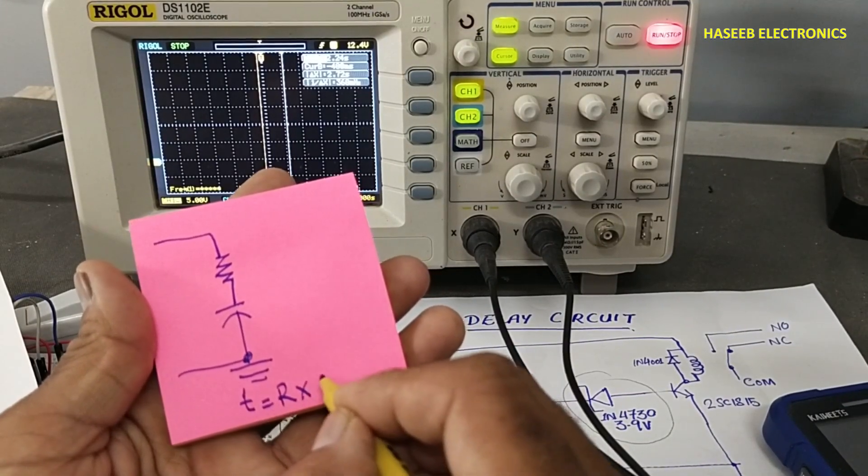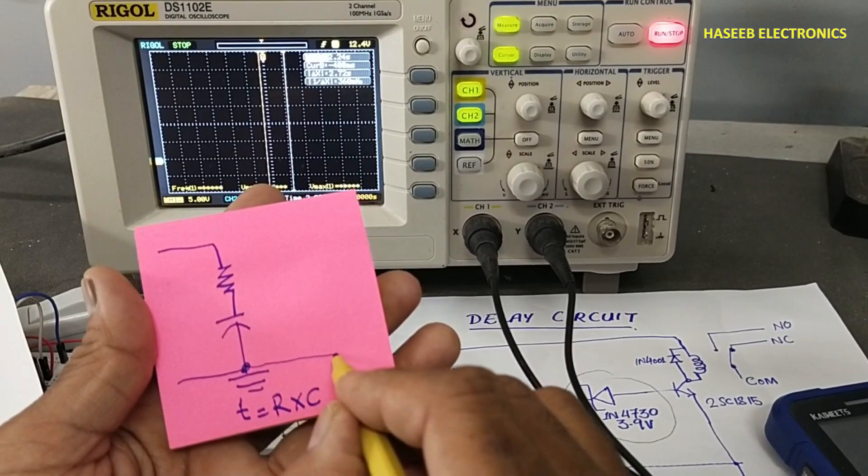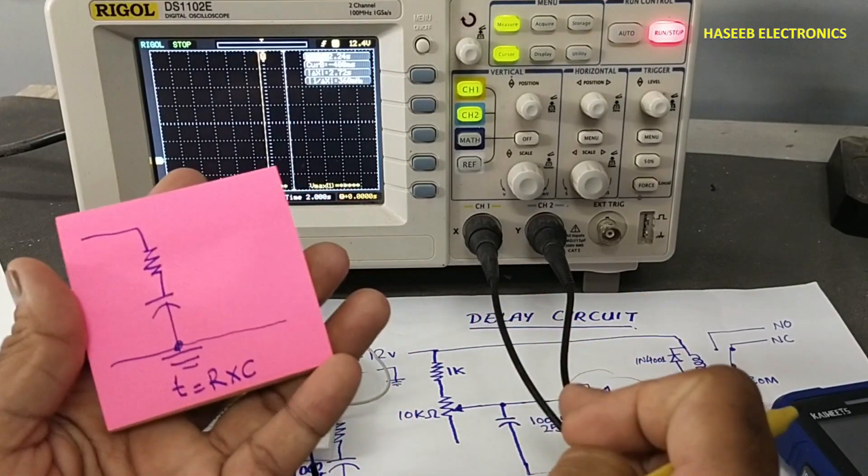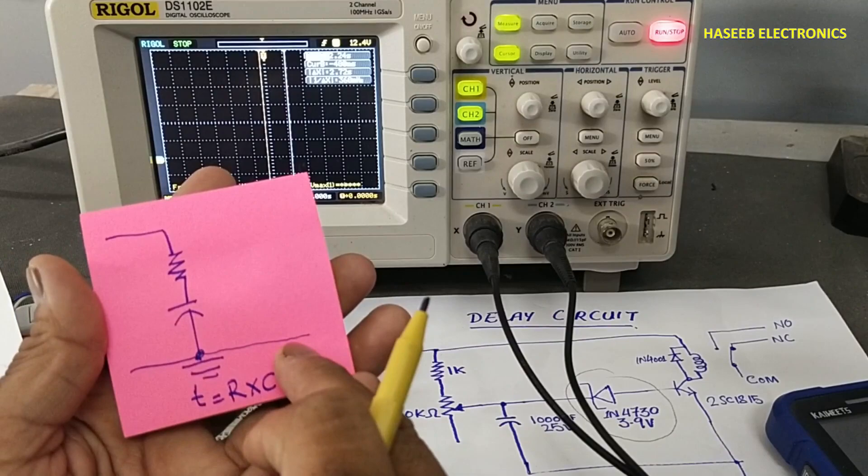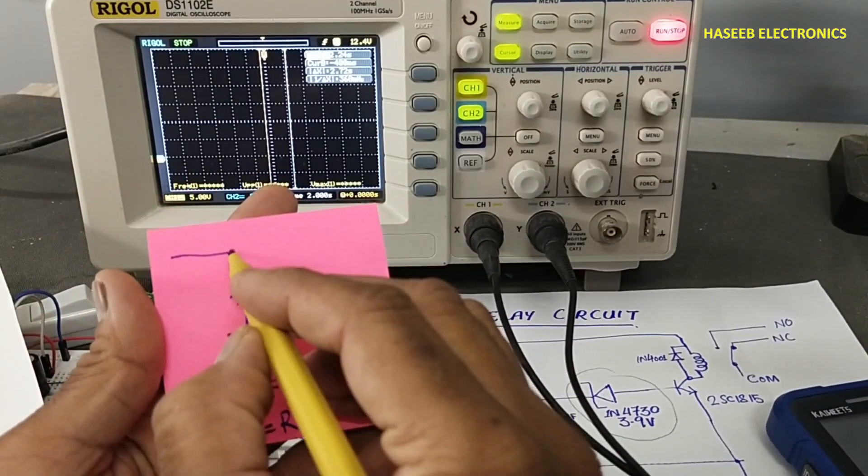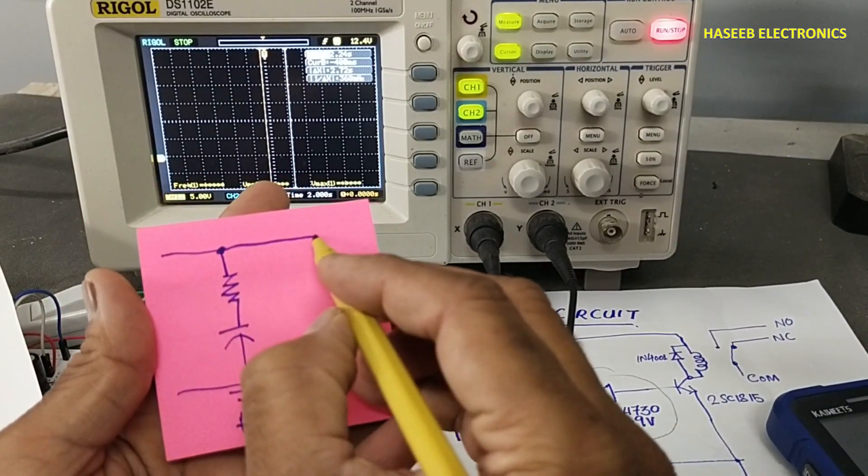We will make common point of the oscilloscope with the circuit common. Channel A we will connect here.